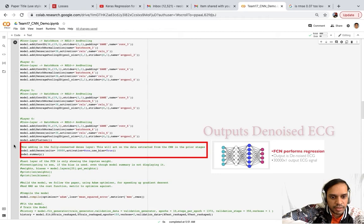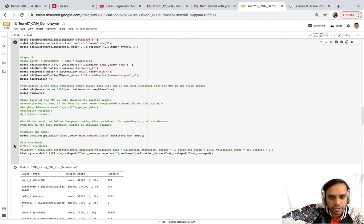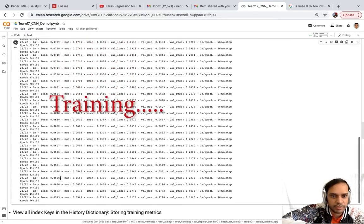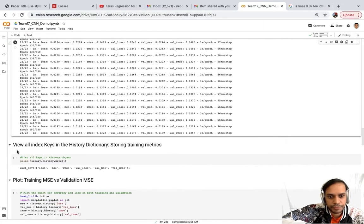So the last layer would be the FCN layer. Its job is to give out the ECG signal with all the noise removed from it. It's like a regression layer, the final layer. So training starts, training continues.